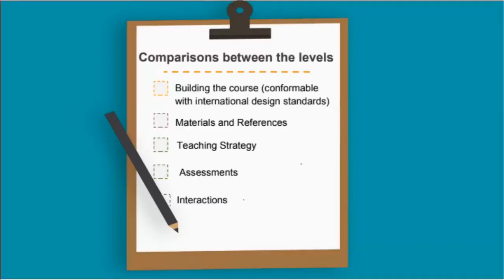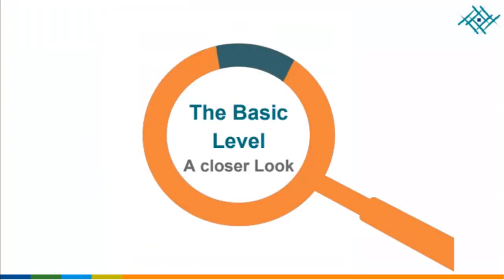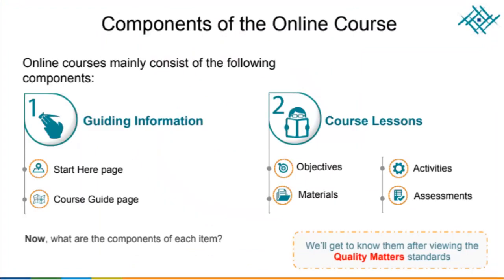We will compare between the levels and build a course with a blended oriented view. We will need the material and references, the teaching strategy, assessment, and interaction. At the basic level we will go for a closer look at what we need — really, the components of an online course. An online course mainly consists of the following components.